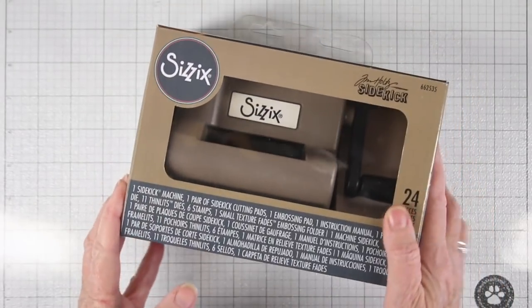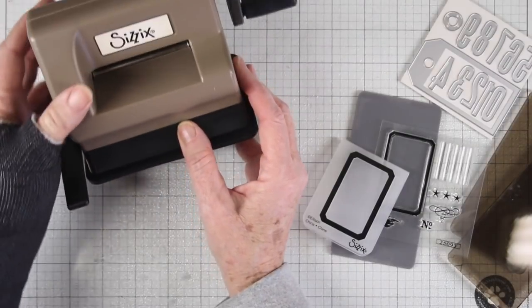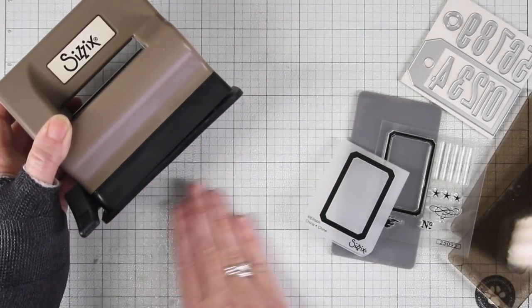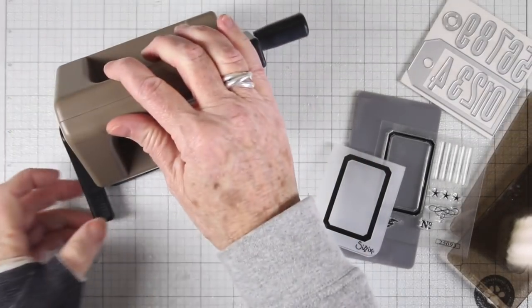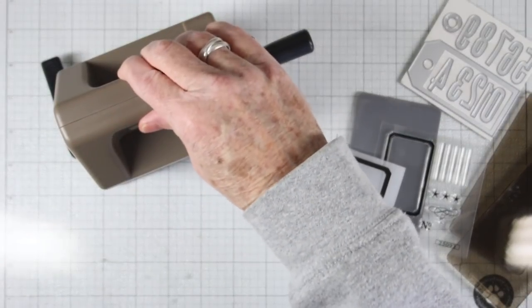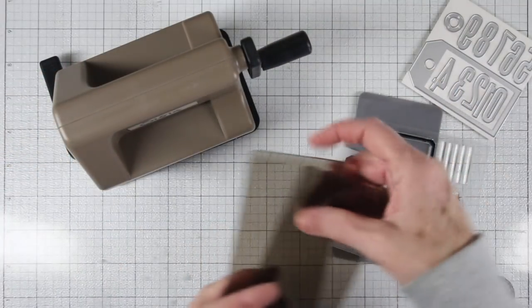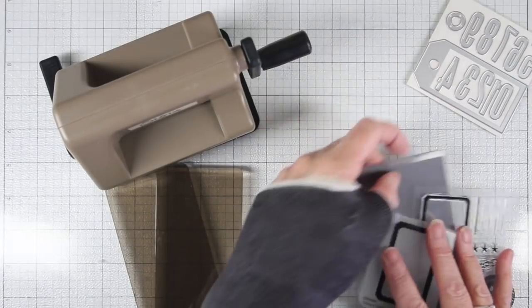The machine itself has a rubber bottom and that will suction onto a nice smooth surface. I work on a glass cutting mat here and so I'll just place this right down and then I can turn the handle and that suctions right onto that surface and then you're ready for die cutting and embossing.